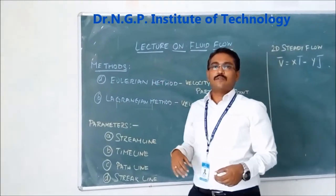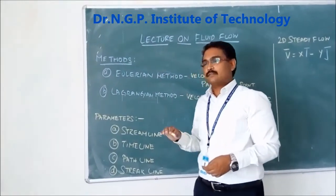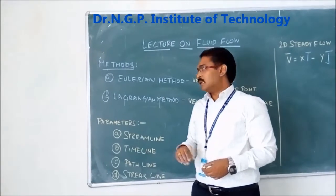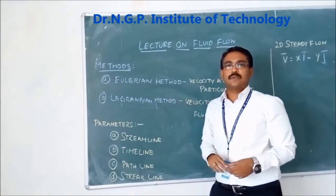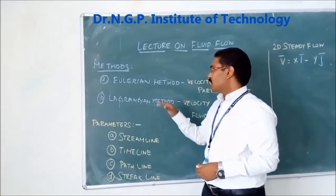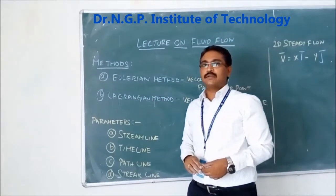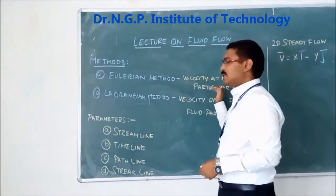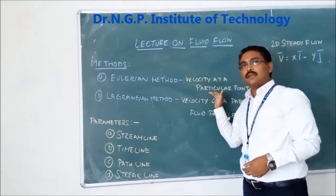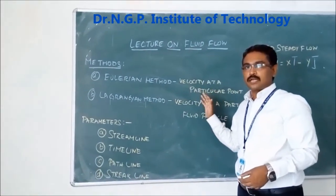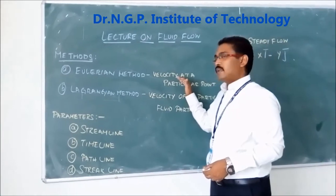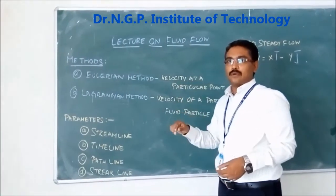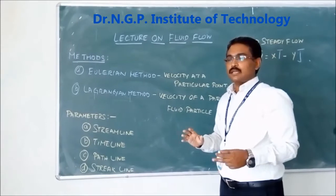Before going into actual fluid flow practices, we will understand the different methods used. There are two basic methods: the Eulerian method and the Lagrangian method. The Eulerian method talks about velocity at a particular point — fluid particles are not individually tracked; instead, we consider the velocity of the fluid at a fixed point.